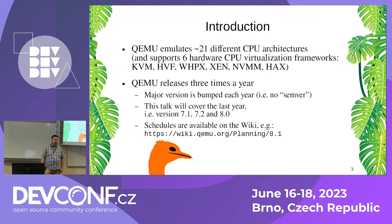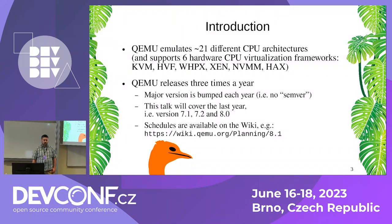QEMU does three releases a year and a major version is bumped at the beginning of each year. So QEMU is not doing any semantic versioning or something like that. This talk will cover the last year, so I will talk about QEMU 7.1, 7.2, and 8.0. The schedules are available in the wiki, so if you are curious when the next version will be released, just have a look at the URL listed here.